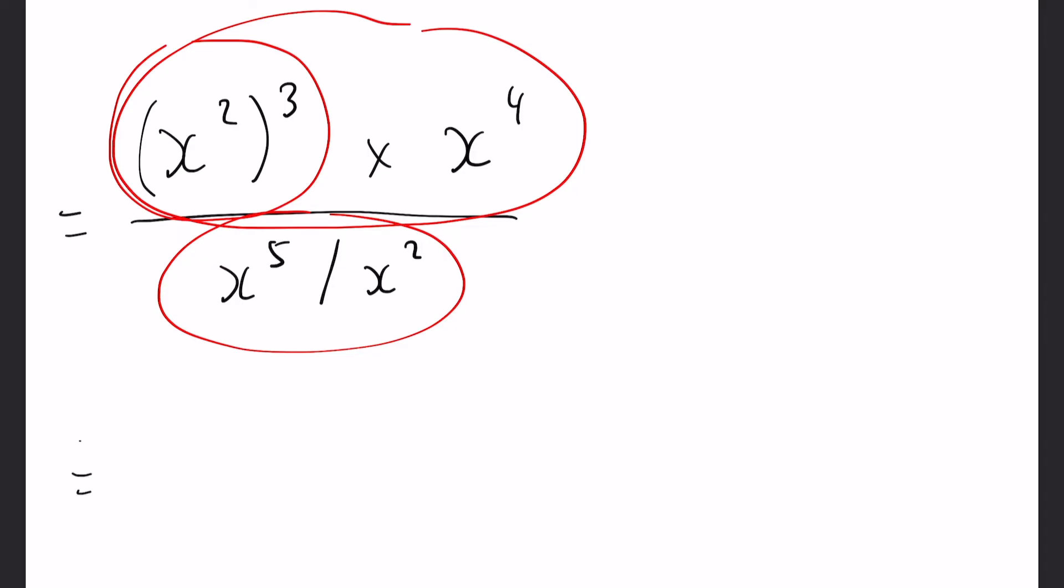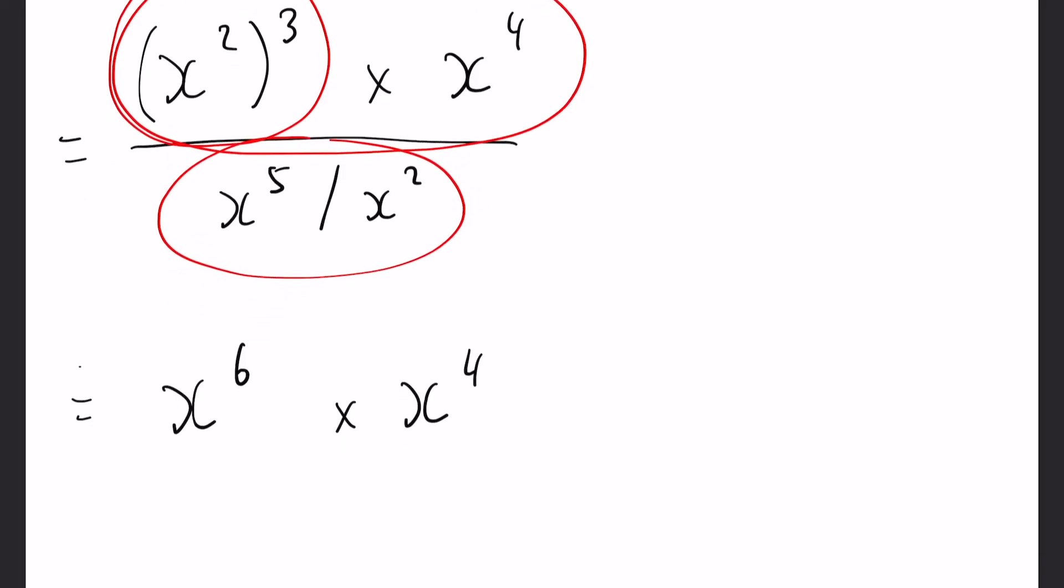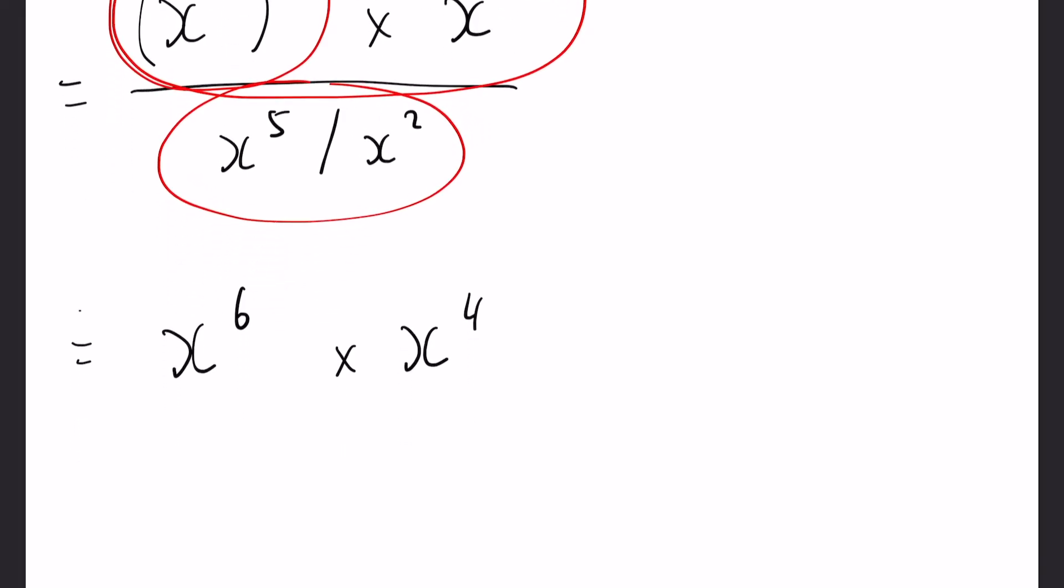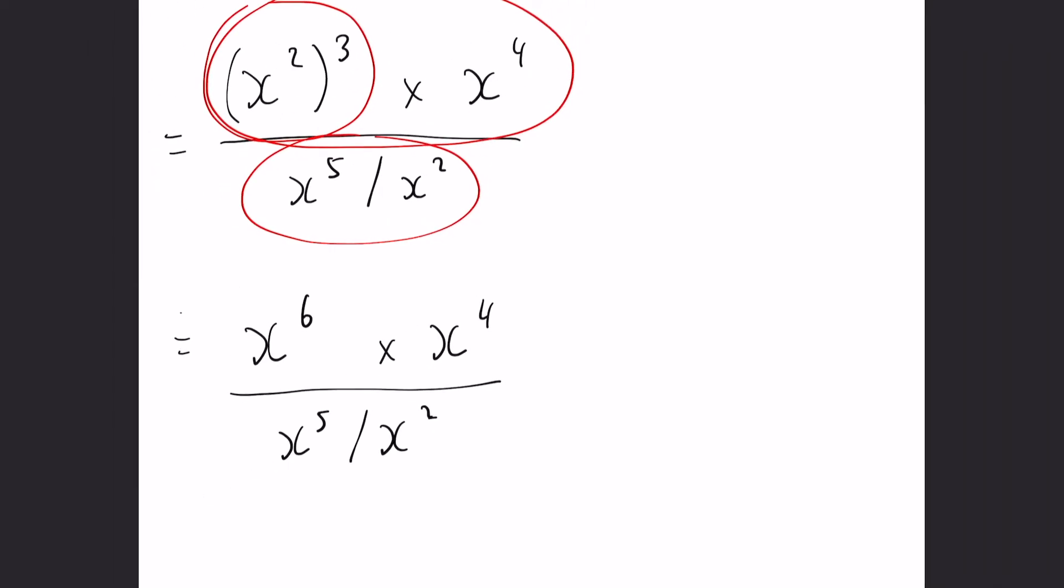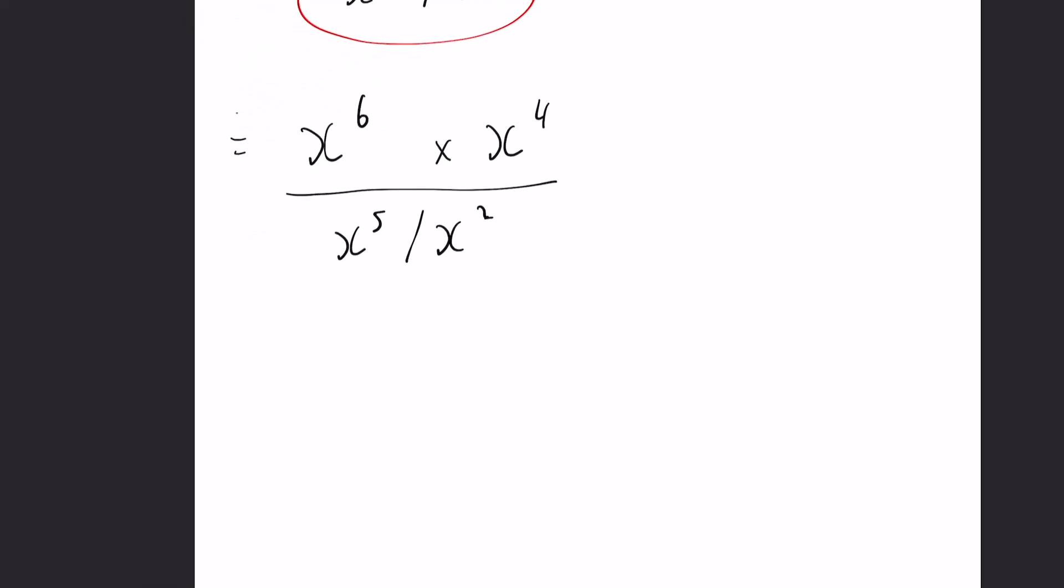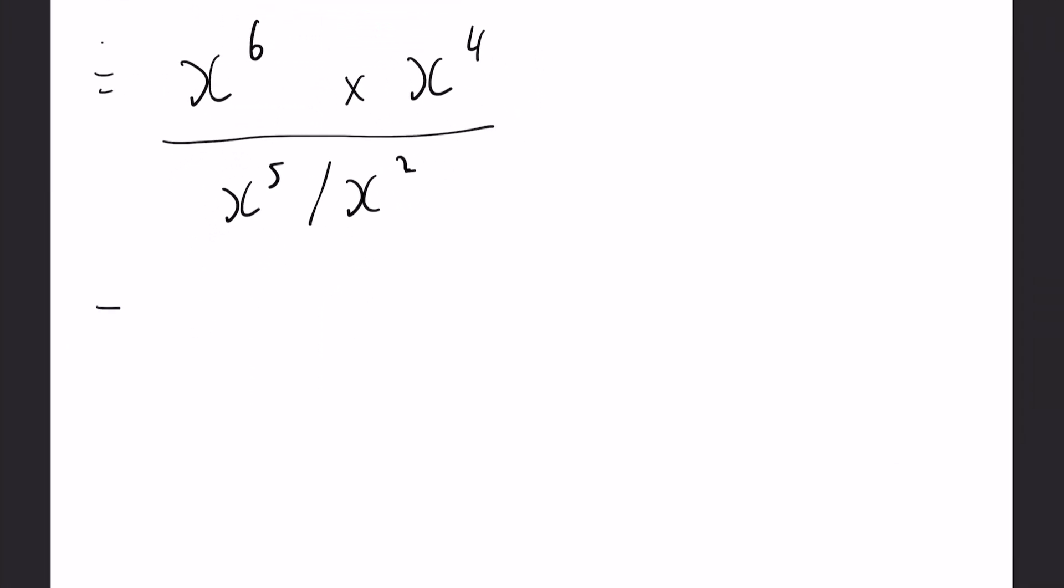So first of all look at the first one, x to the power of 2 all cubed. Now from our rules we know that when we've got brackets we simply times the powers together, so x to the power of 2 times 3 is going to be x to the power of 6. Now we have that times the power of 4 times x to the power of 4 and we want to divide that by the bottom bit there. Now I think it's really important to write out these steps even if this is only worth one or two marks, I think it's really important to write them out step by step to make sure you don't make any mistakes.